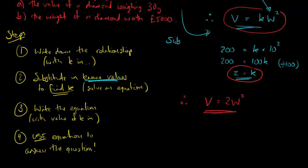This is a brilliant formula now or an equation that links v and w. So I can go on to step 4 which is basically to use this equation to answer the question. And it wants two things. First of all it wants the value of the diamond that weighs 30 grams. So when w equals 30 what is v? Well my equation tells me that v is equal to 2 times w squared.